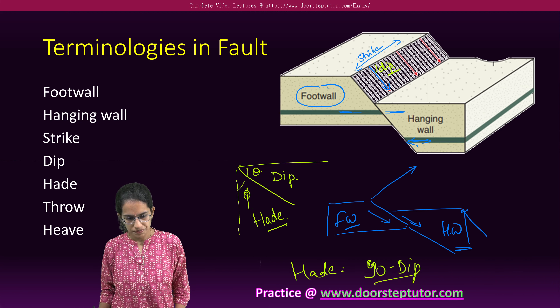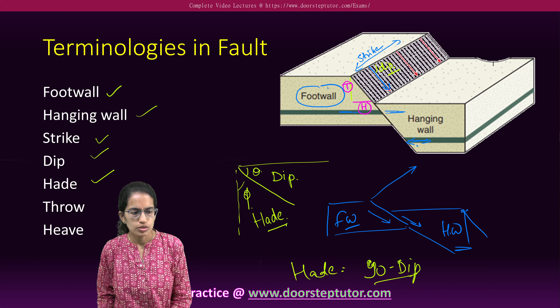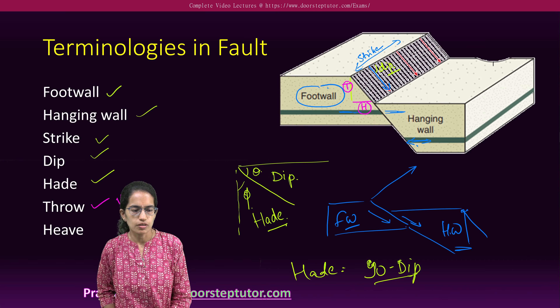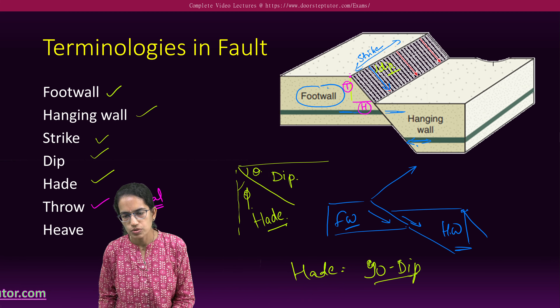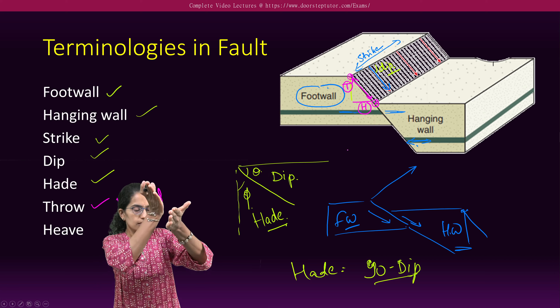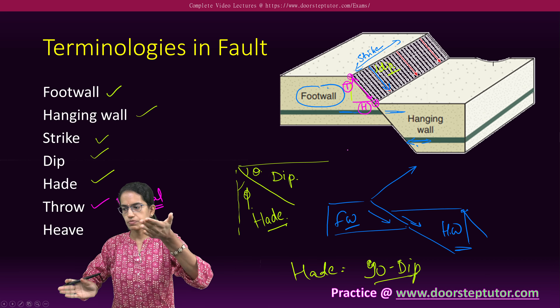Throw and heave: throw is the vertical component, and heave is the horizontal component. A helpful memory aid — edge for horizontal applies to heave, and throw is the vertical component. The original position compared to the displaced position gives us what is called the net displacement.